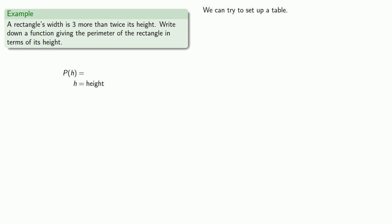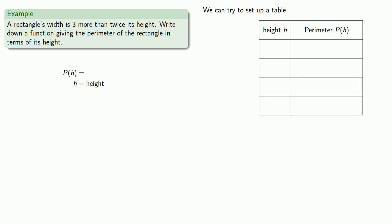And again, let's see if we can set up a table to find our perimeter. So I'll pick a value for the height and find a value for the perimeter. So if the height is 5, the perimeter is... Well, that looks like it's going to be a little bit hard to calculate. If I want to find the perimeter of a rectangle, it's helpful if I also know the width. So I'll add in an extra column here.